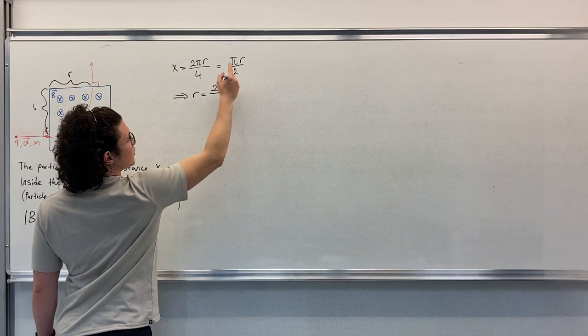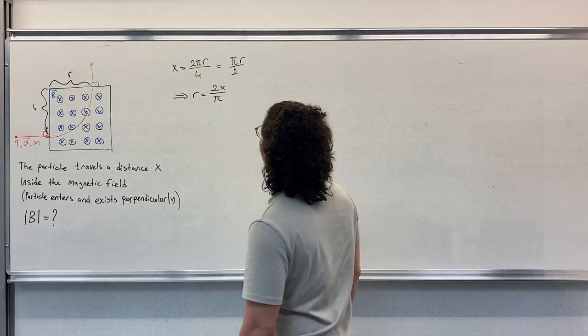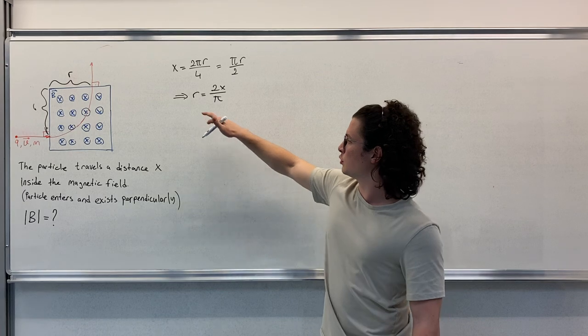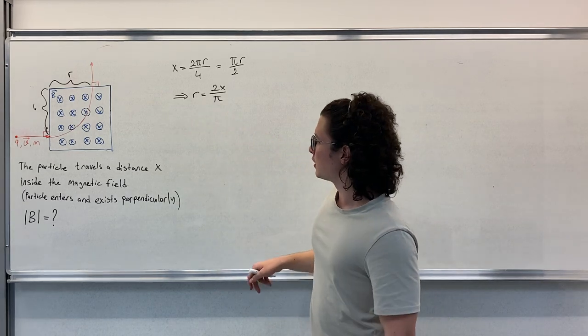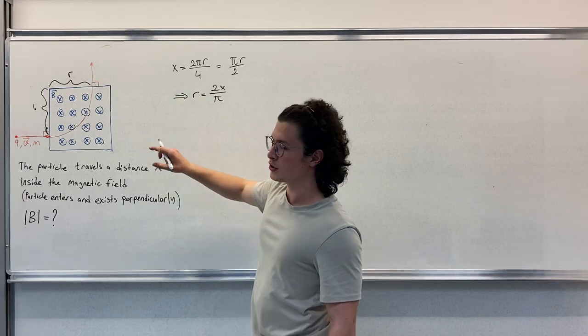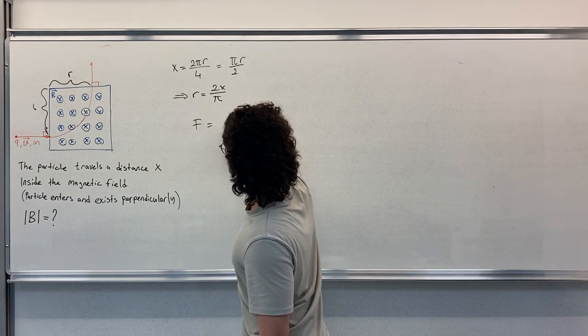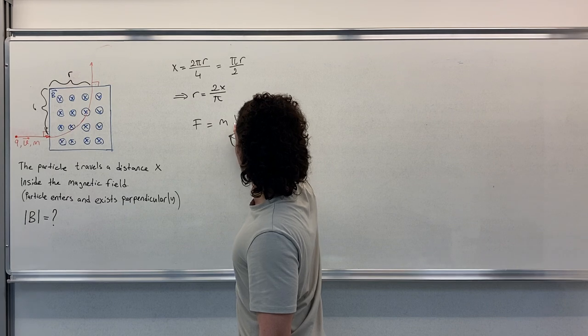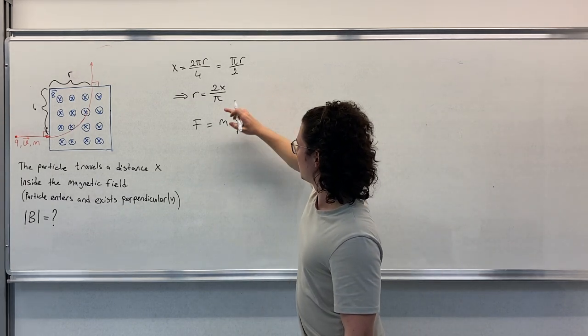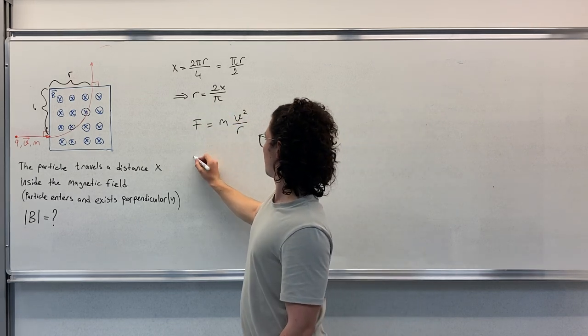From this we can obtain r as 2x over π. We found r because we will use it in the force equations. So we know that the centripetal force is equal to mv² over r.